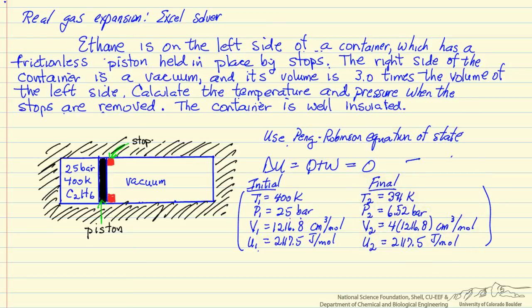We have used the first law for a closed system to say that the internal energy does not change between the initial and final conditions, so we are going to use the spreadsheet to find the temperature and the pressure at the final conditions so that the internal energy is the same, and we are going to do that with the constraint that the final volume is going to be four times the initial volume, because the vacuum volume is three times the initial volume of the gas, so the total final volume is four times the initial volume.